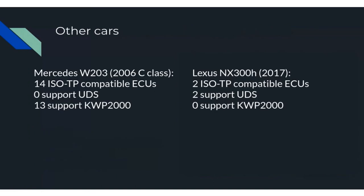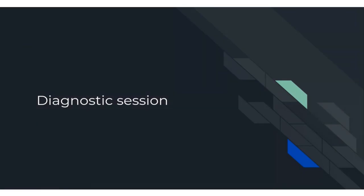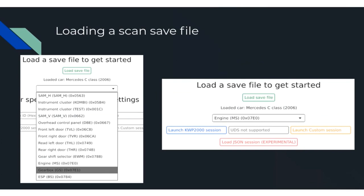Once the user has saved their scan results they can open the save file. When loaded, OVD automatically tells you which sessions you can support and launch. For instance, the UDS button is greyed out because none of the ECUs in my car support UDS. You can launch a KWP2000 session, select a KWP2000 command and its local identifier, give it some arguments, send it, and the ECU responds — with the error code displayed in a meaningful way to the user. You can also launch a custom ISOTP generic session to send payloads and listen for responses.